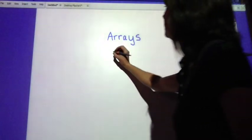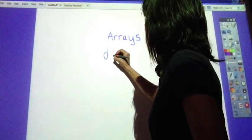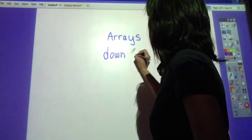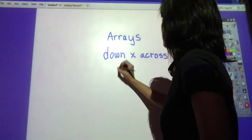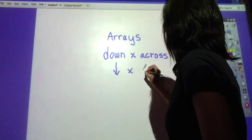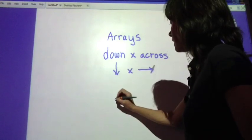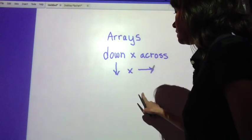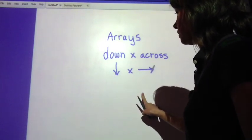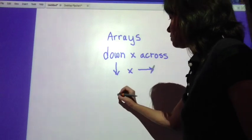Okay, so now it's your turn to try. You can get a piece of paper. Remember we're going down times across. Rows down times columns across. Don't forget to put your multiplication sign in the corner. Okay, you try this one.